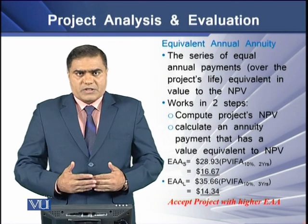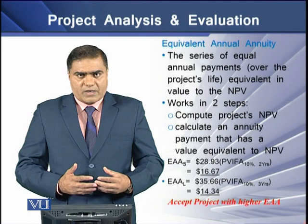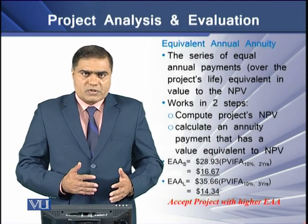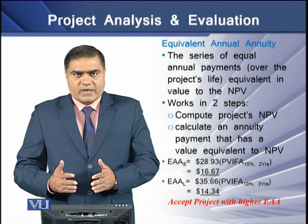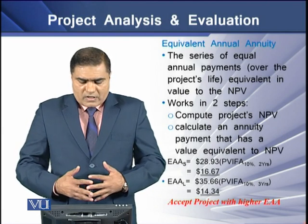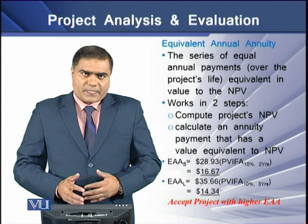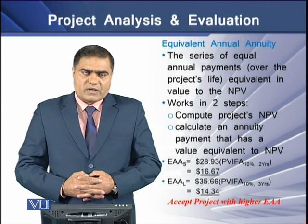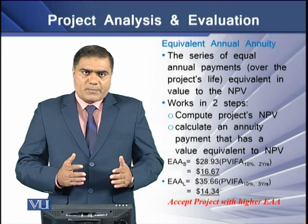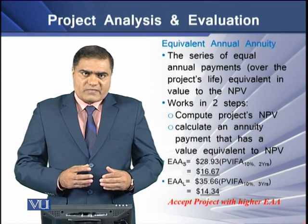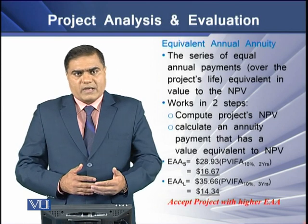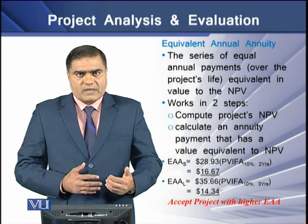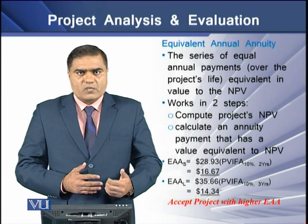In the second approach — the equivalent annual annuity, or EAA — we determine the present value of an annuity whose collective value equals the net present value of our given project. It works in two ways: first we compute the NPV of the given project, and then we determine the present value of this NPV, which is termed as the equivalent annual annuity.